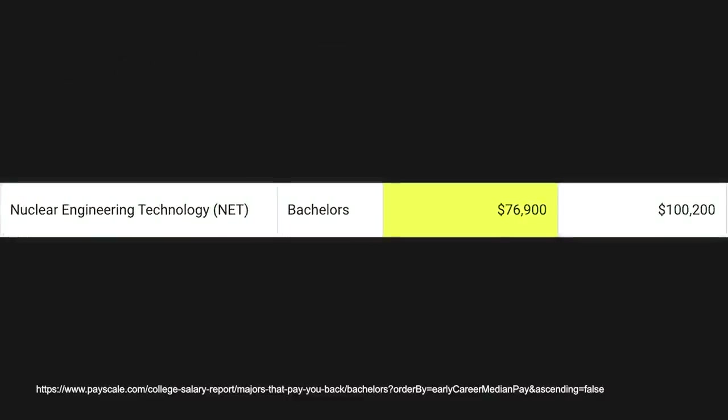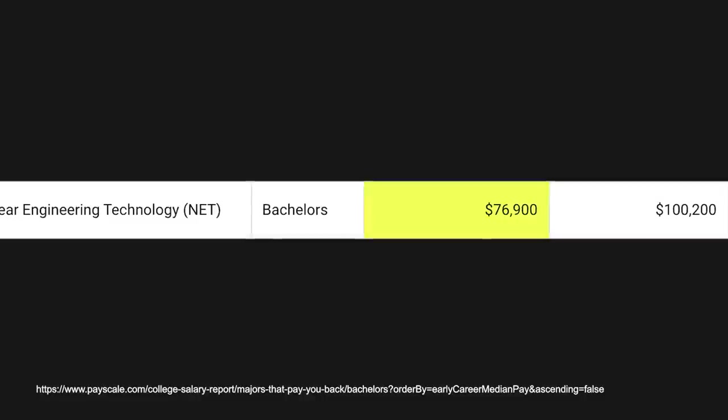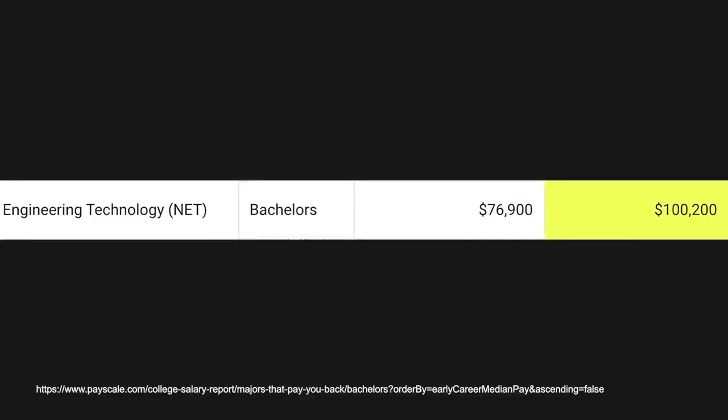Number six on the list is nuclear engineering technology. Another big player in the energy war that is currently happening right now, nuclear engineering, nuclear energy in general is something that is very interesting, and there's quite a bit of money in it. This is another one where there's a lot of money at every single level, kind of like the natural gas industry. With this degree, you're going to make $76,000 a year, almost $77,000 right out of college, and mid-career pay is $100,000 a year.